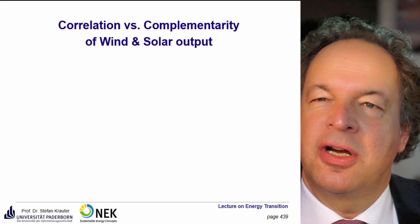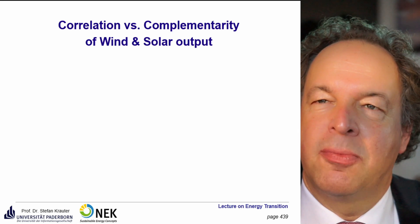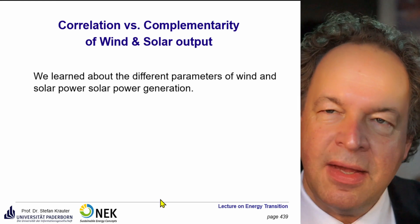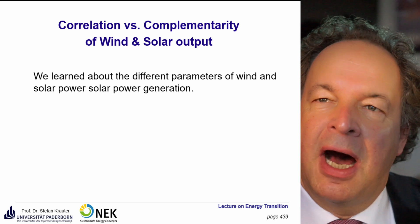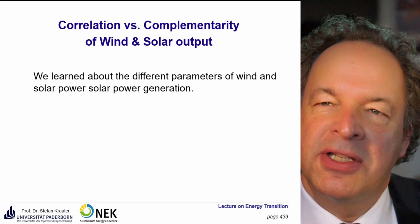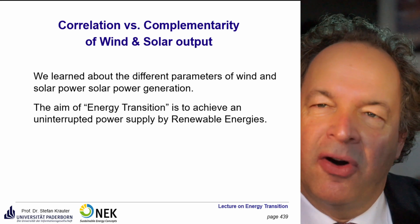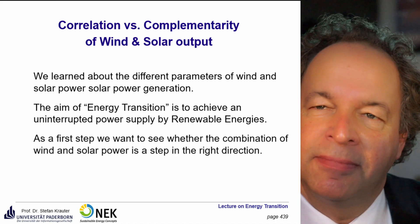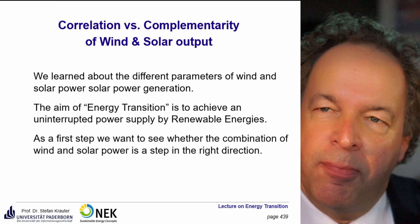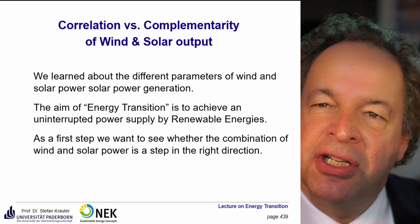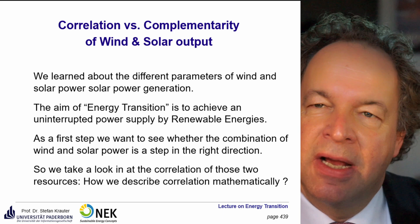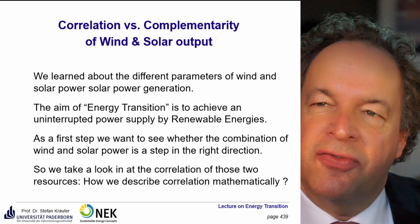Today will be a rather short lecture. We will talk about the correlation and complementarity of wind and solar output. We already learned a lot about the different parameters of wind and solar power generation. The aim of energy transition is to achieve an uninterrupted power supply by renewable energies only. As a first step, we want to see whether the combination of wind and solar is a step in the right direction, so we take a look at the correlation of those two.